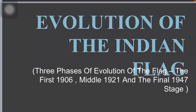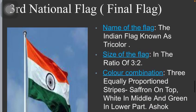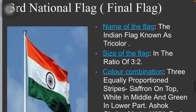Evolution of the Indian national flag. The final flag was hoisted in 1947. India's national flag, the tricolor, is the story of the Indian people and a symbol of their international identity. The ratio of the length is 3 meters and the width is 2 meters.